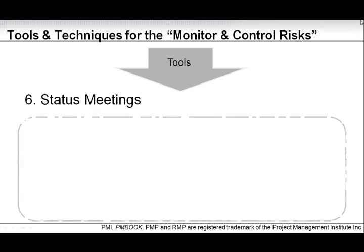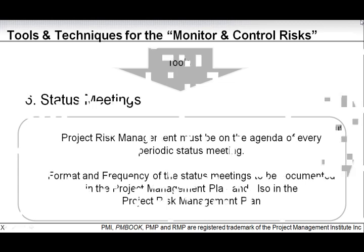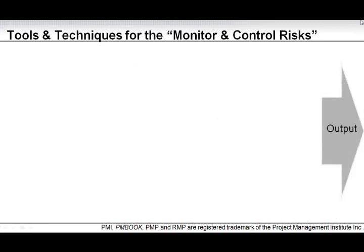Status meetings. Project risk management must be on the agenda of every periodic status meeting. The format and frequency of status meetings should be documented in both the project management plan and the project risk management plan. That covers the tools and techniques for monitoring and controlling risks.